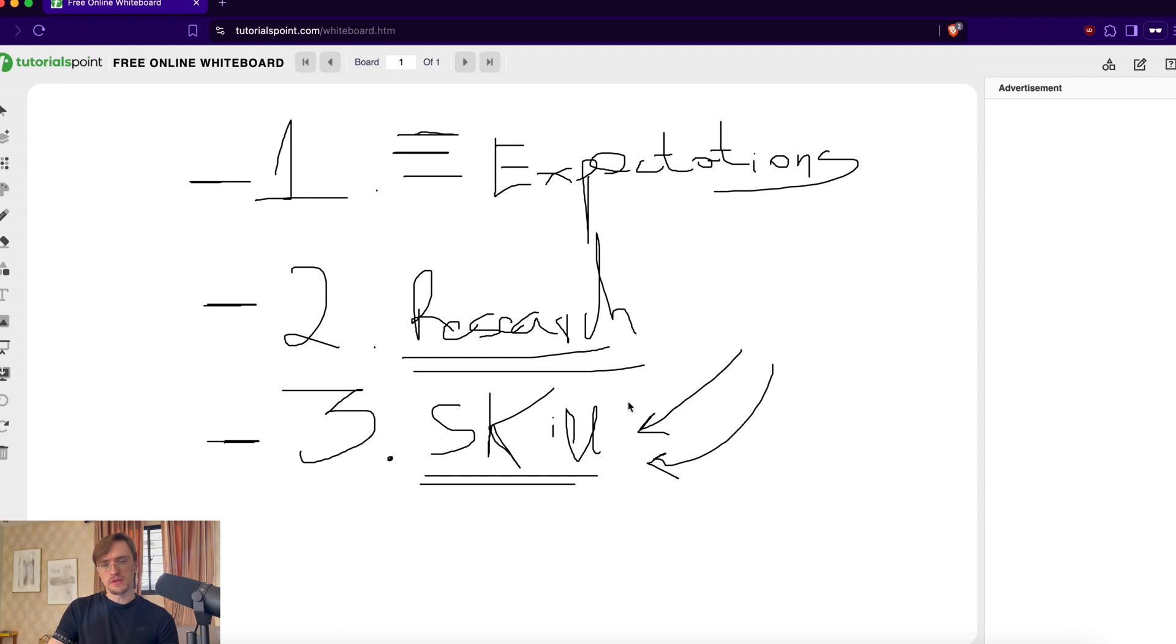You need to understand all the different layers that are involved. Until you really have the experience, until you really do it, you don't understand what it takes. So those are the three mistakes: expectations—you will waste time if you don't have clear expectations and you'll lose motivation; research—you need to do a lot of research in order to find the right bots and build something that is effective.